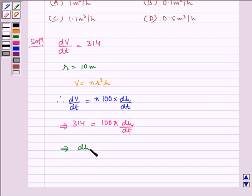Which implies dh/dt equals 314 divided by 100 pi. Taking pi as 3.14, this equals 314 divided by 100 times 3.14, which equals 1.